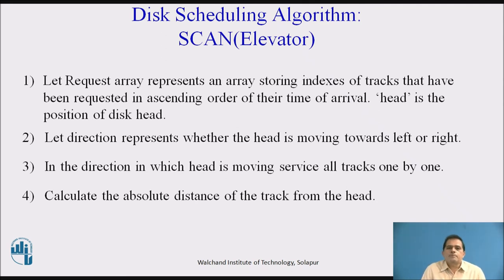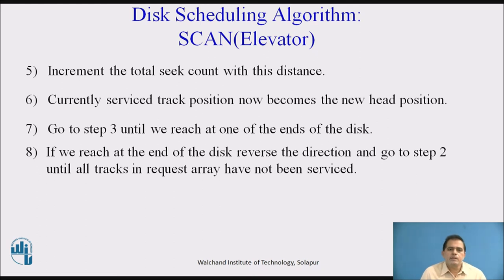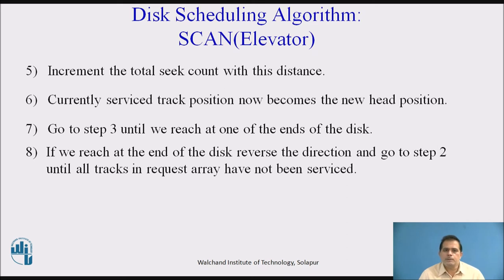The algorithm steps for SCAN are: First, the request array stores indexes of tracks in ascending order of arrival time, and the head is the current disk head position. Second, let direction represent whether the head is moving left or right. In the direction the head is moving, service tracks one by one and calculate the absolute distance from the head. Third, increment the total seek count with this distance. Fourth, the currently serviced track becomes the new head position. Fifth, go to step 3 until reaching one end of the disk; then reverse direction and continue until all tracks are serviced.